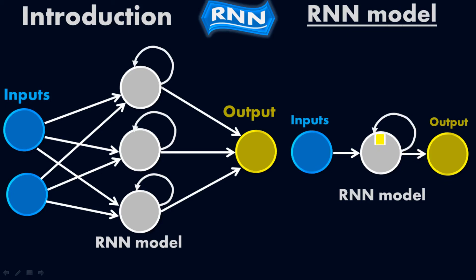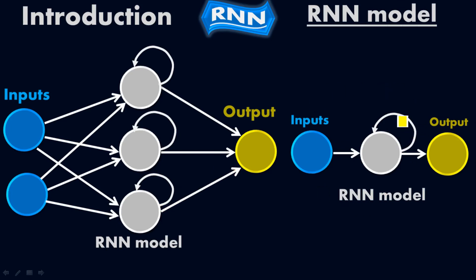The output coming out from the hidden layer is reconnected back to the same node for the repetition purpose, as well as going forward to the output layer. Similarly, the output is reconnected back to the same node and also goes forward to the output layer. In this diagram we can clearly see the reconnection back to the same node while still moving ahead to the output layer.